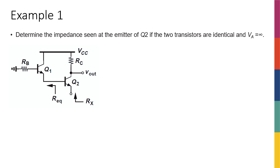Okay, so let's solve an example. The question is asking us to determine the impedance seen at the emitter of Q2.